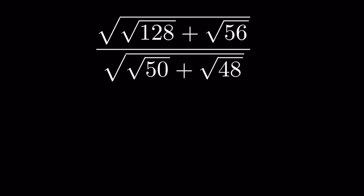Square root of 128 plus square root of 56, all under square root, upon square root of 50 plus square root of 48, all under square root. How do we simplify this?